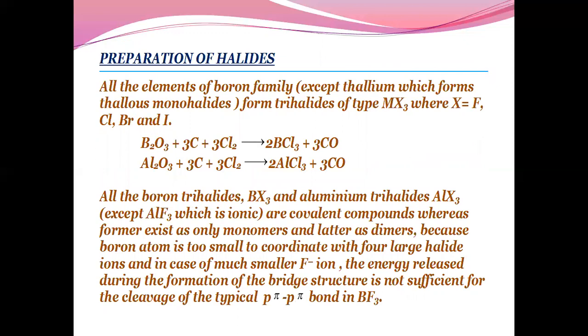Preparation of halides: All the elements of boron family except thallium, which forms thallous monohalide, form trihalides. All form trihalides except thallium. Only thallium forms monohalide. All the boron trihalides and aluminium trihalides are covalent, whereas aluminium chloride is ionic. Boron exists as monomers whereas aluminium usually exists as dimers because boron atom is too small to coordinate with four large halide ions. And in case of much smaller fluoride ions, the energy released during formation of bridge structure is not sufficient for cleavage of the pi bond in BF3.